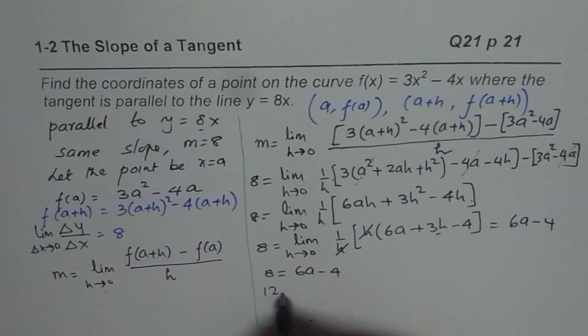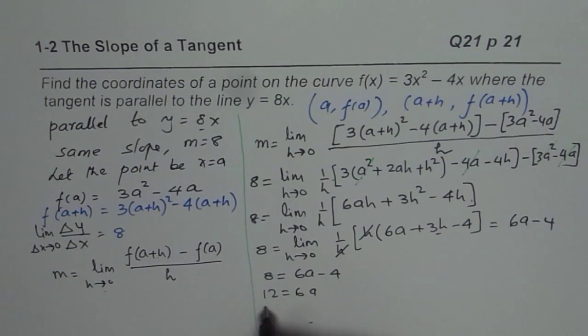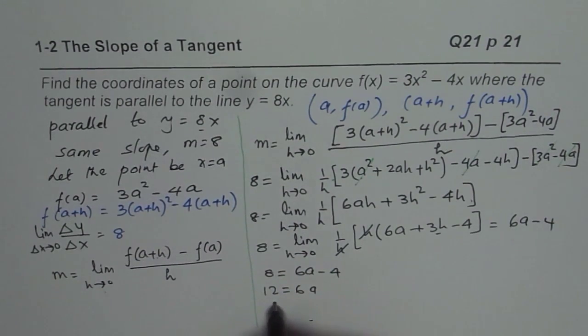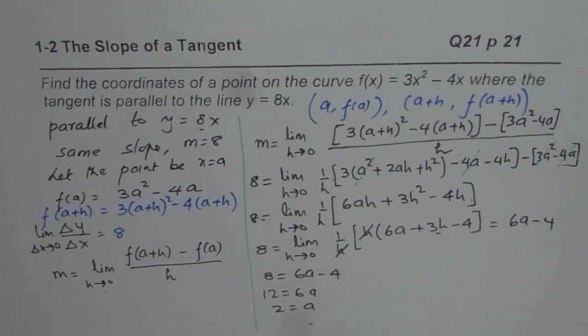Bringing 4 here, we get 12 = 6a. Divide by 6, you get 2 = a. So, the point value is a, a value is 2.